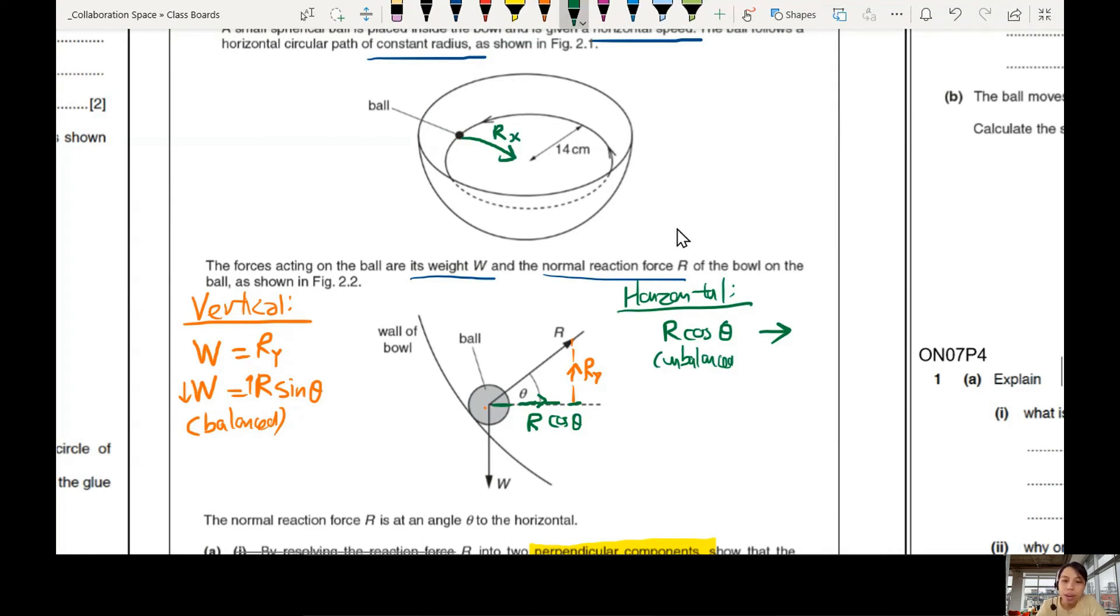So if I want to draw the R cos theta, something like this, R. I just write here R_x. So your R_x is going to be the unbalanced force, which is centripetal force.